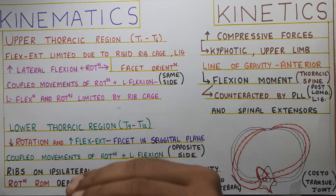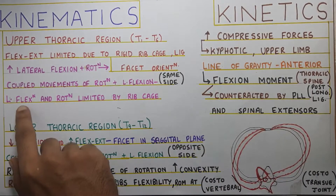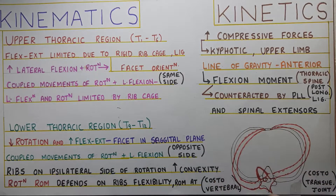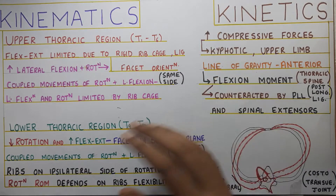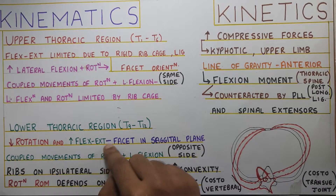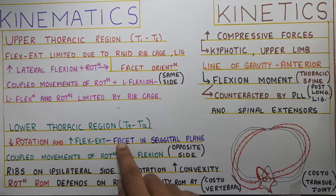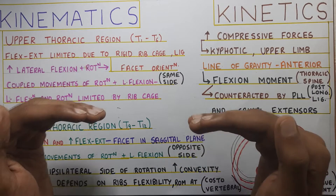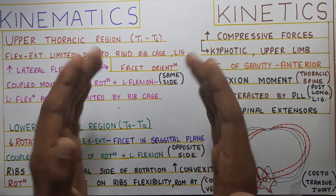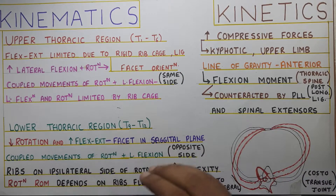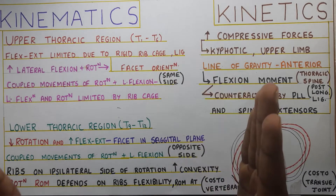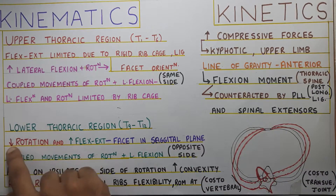Lateral flexion and rotation are limited by ribcage mobility, which we'll come to shortly. In the lower thoracic region, rotation is reduced and comparatively flexion and extension is increased. This happens because the facets are in the sagittal plane — as the transition from frontal plane to sagittal plane occurs moving toward the lumbar spine, the lower thoracic facets are arranged in more of a sagittal plane orientation, increasing flexion extension and reducing rotation.